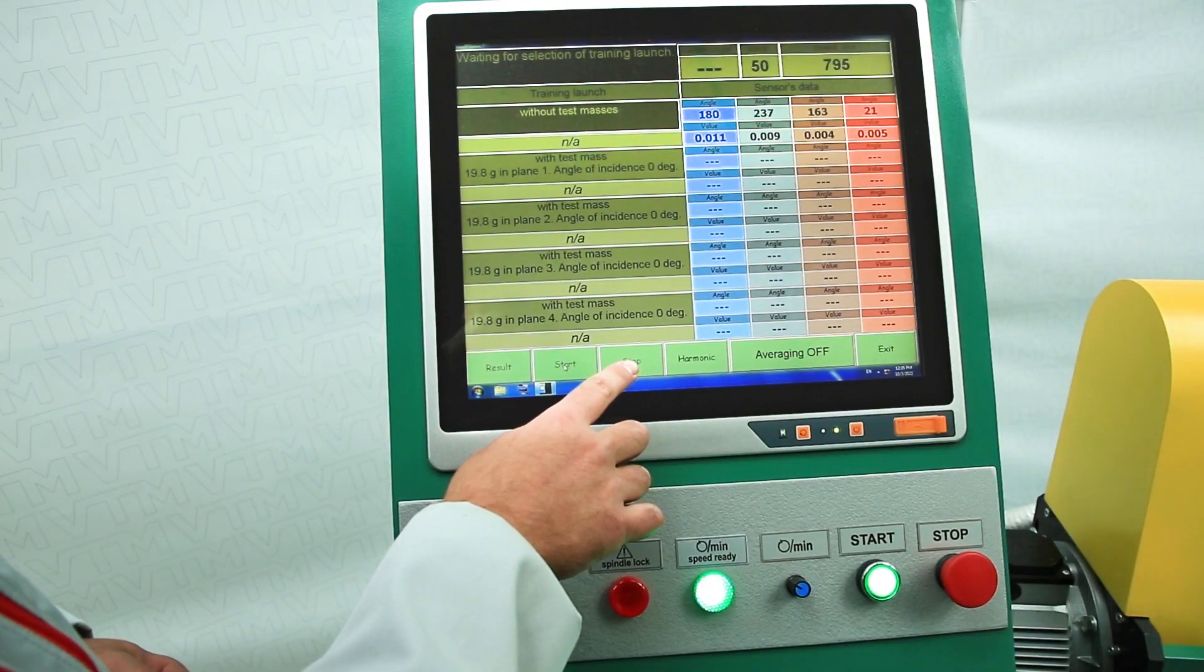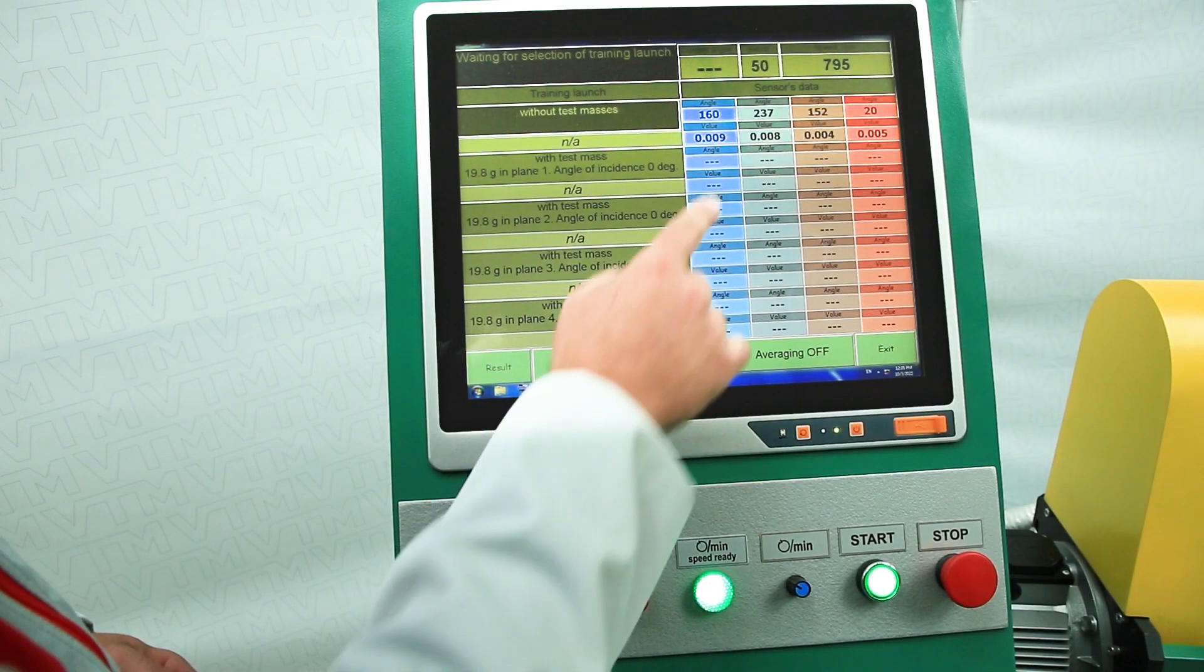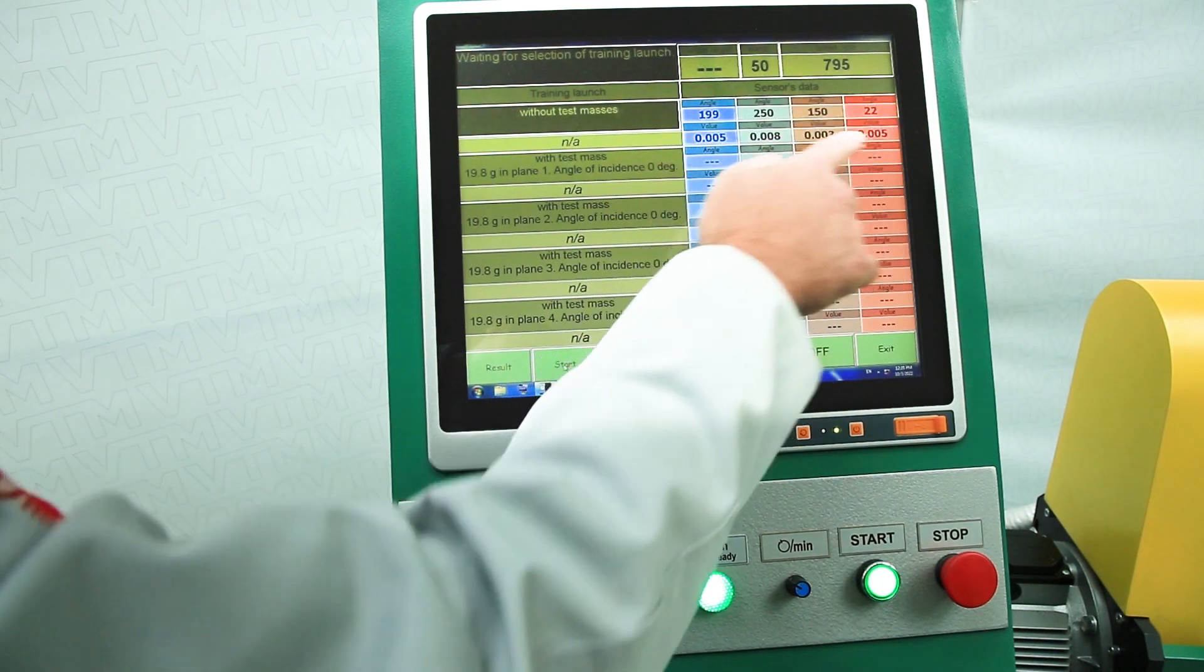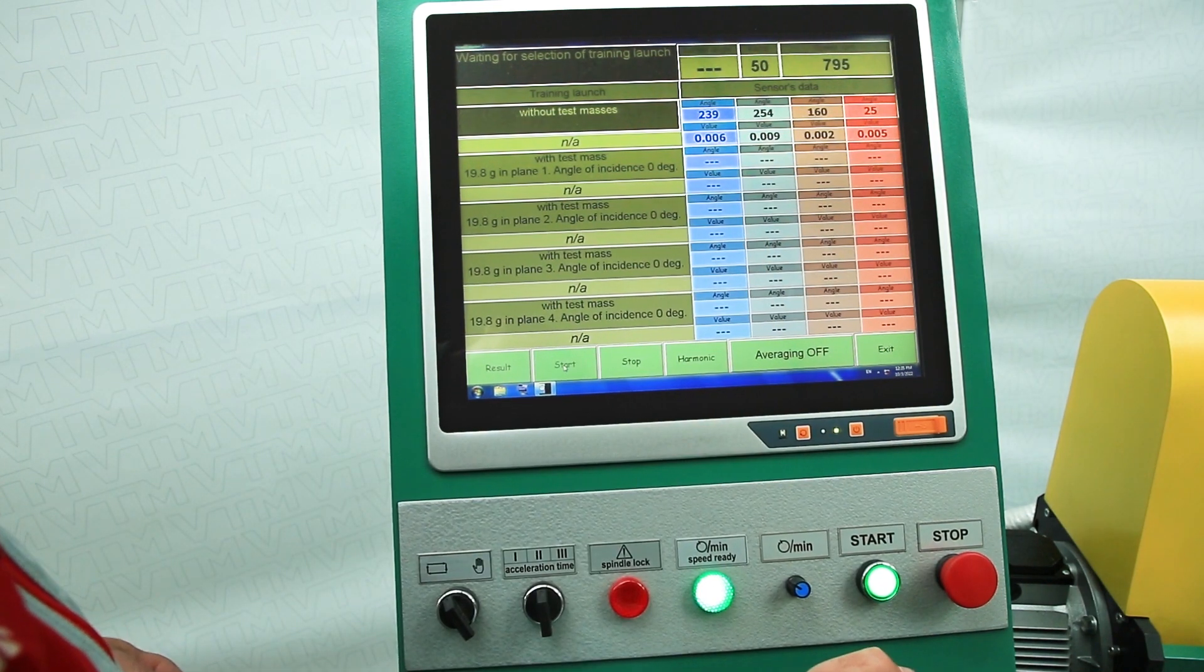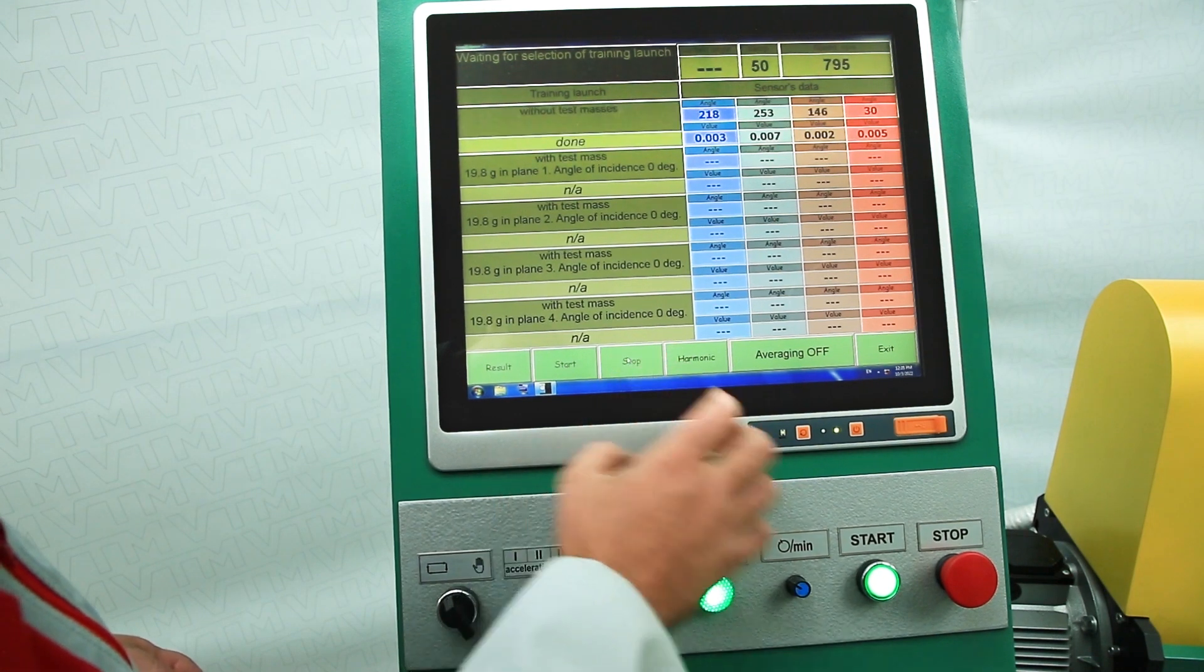Press the accept button, then select start without trial load and press start rotation. We wait until the light bulb lights up the purity is reached, and press the start measurement button. We are waiting for the stop button to be active. After that, we look at the stability of the display of angles and magnitudes. After everything is stable, we press stop measurement and stop rotation.